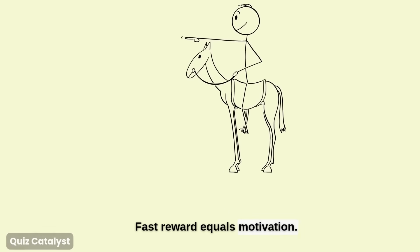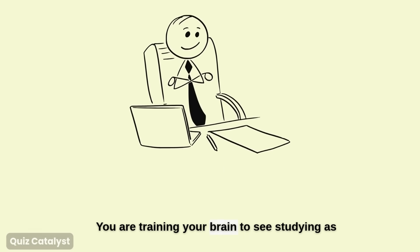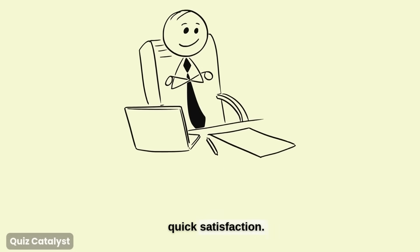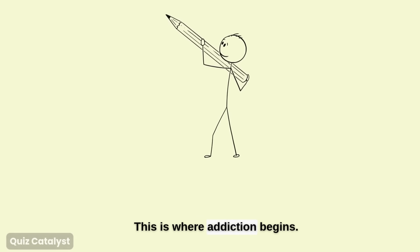Completing a tiny task gives your brain a fast dopamine hit. Fast reward equals motivation, momentum. You are training your brain to see studying as quick satisfaction. This is where addiction begins.